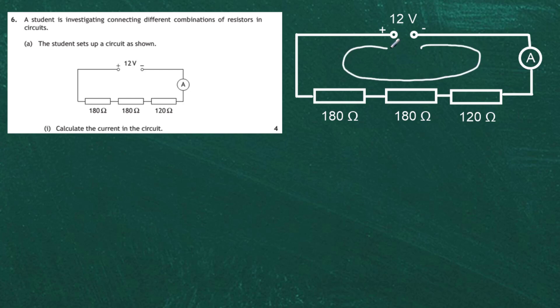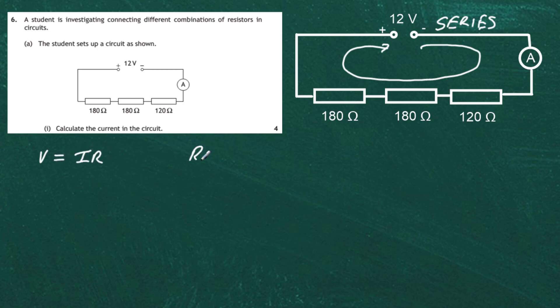So we say it's a series circuit, and if we know it's a series circuit we know the current is going to be the same at every part of the circuit — that will be the reading on the ammeter. We've got to calculate the current in that circuit, so we go to our data book. We should know that V equals IR, and that really comes from Ohm's law.